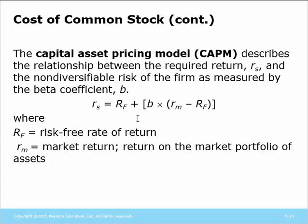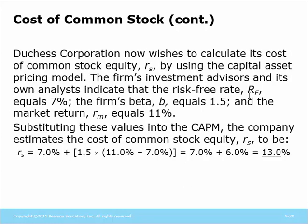Another method to calculate the cost of retained earnings is the capital asset pricing model. That uses the risk-free rate from treasury bonds, the beta of the company, and the average rate of return on the stock market. For this company, the risk-free rate is 7%, beta is 1.5, and the return on the market is 11%. Plugging that in, we again end up with 13% as the cost of financing.